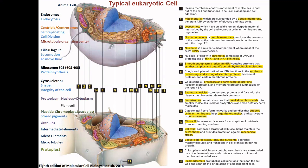Then there is the smooth endoplasmic reticulum — it has no ribosomes attached, hence it is smooth. This is the site of lipid synthesis and detoxification of certain hydrophobic molecules. The rough endoplasmic reticulum is continuous with the nuclear envelope and has ribosomes on it, which are responsible for protein synthesis. The space inside the rough ER is called the cisternal space or lumen. Processing and sorting of secreted proteins into transport vesicles takes place in the endoplasmic reticulum.